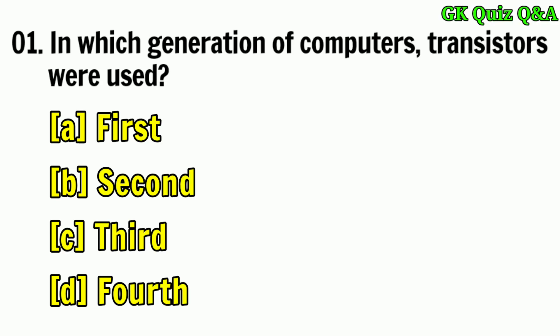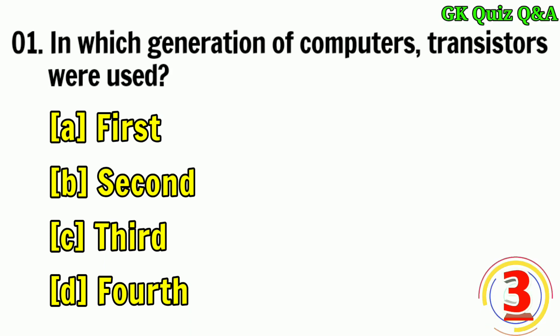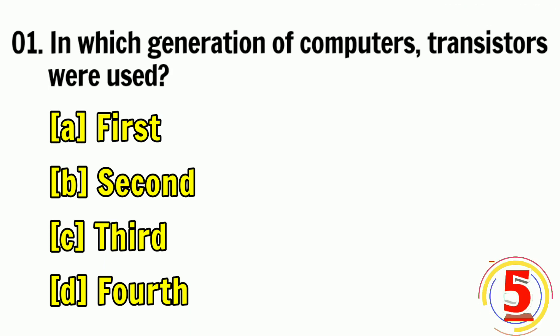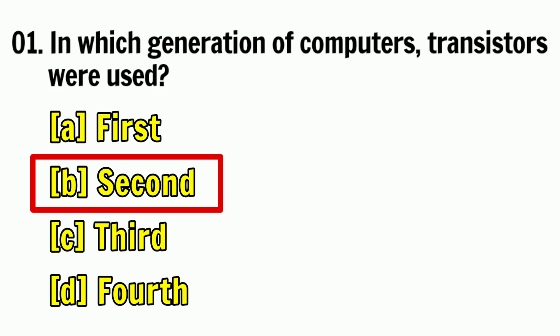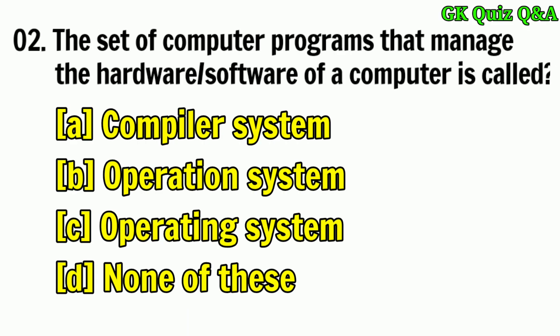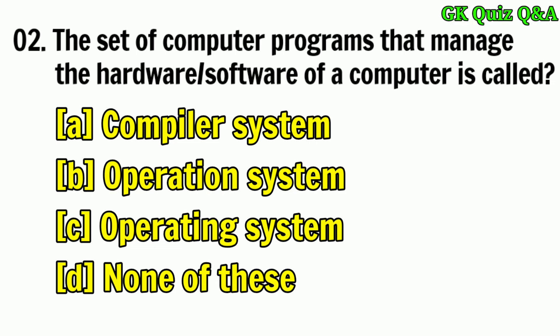In which generation of computers were transistors used? Answer B: Second Generation. The set of computer programs that manage the hardware or software of a computer is called?